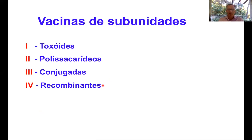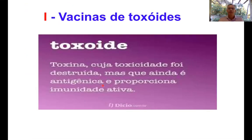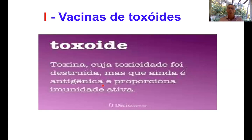Vou explicar um pouco de cada uma delas, começando pelos toxóides. As vacinas feitas de toxóides utilizam uma toxina que as bactérias produzem e, geralmente, essa toxina é responsável pela patogenicidade da bactéria. Porém, quando essa toxina é tratada com alguma substância química ou aquecida, ela muitas vezes perde essa capacidade de toxicidade, mas mesmo assim ela permanece imunogênica — ela é capaz de estimular uma resposta imune. Esse produto, essa toxina que perdeu a sua toxicidade, nós chamamos de toxóide.